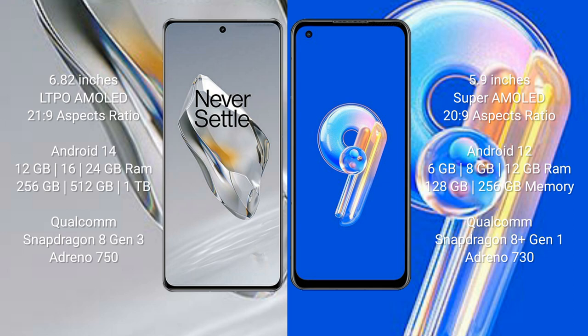OnePlus 12 comes with 12GB, 16GB, or 24GB RAM and 256GB, 512GB, or 1TB internal storage, with a Qualcomm Snapdragon 8 Gen 3 processor and GPU Adreno 750. Asus Zenfone 9 comes with 6GB, 8GB, or 16GB RAM and 128GB or 256GB internal storage, with a Qualcomm Snapdragon 8 Gen 1 processor and GPU Adreno 730.